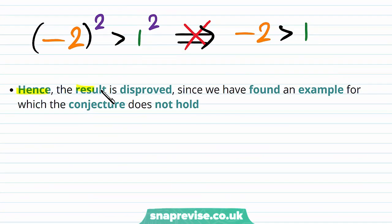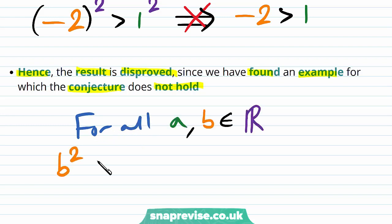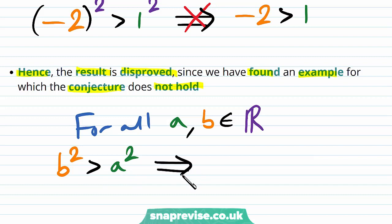Hence, the result is disproved, since we have found an example for which the conjecture does not hold. So, for all a, b in the real numbers, b squared being greater than a squared implying that b is greater than a is an untrue statement.